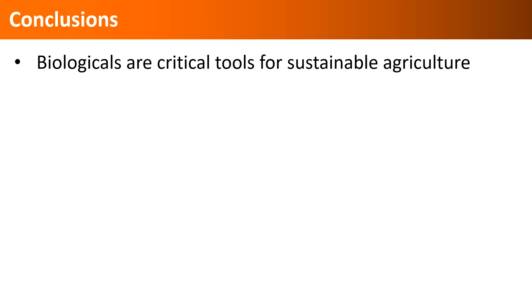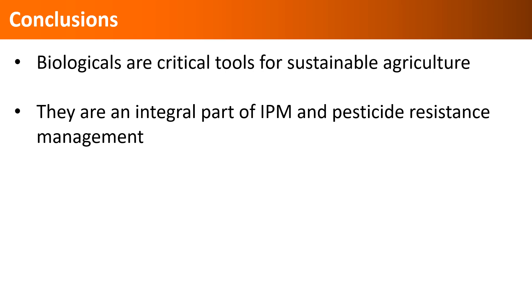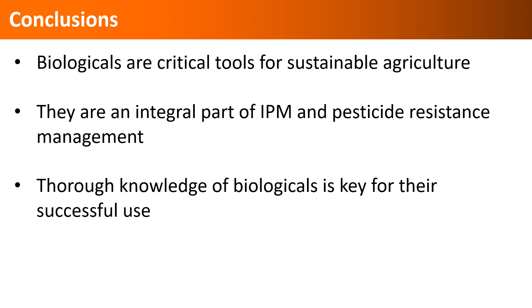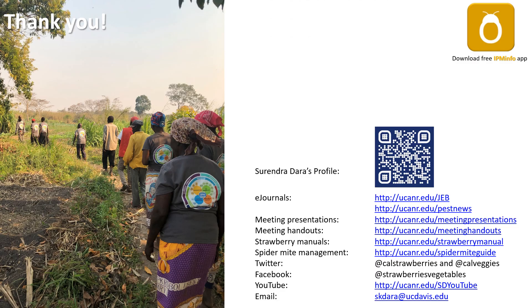In conclusion, biologicals are very important tools for sustainable agriculture, both for agronomic and crop protection purposes. Biologicals are an integral part of various IPM options and are important for pesticide resistance management. A thorough knowledge of various biologicals and their use strategies is necessary for their success. Thank you for listening to this presentation, and feel free to contact me or connect with me on social media. Please consider subscribing to this channel.